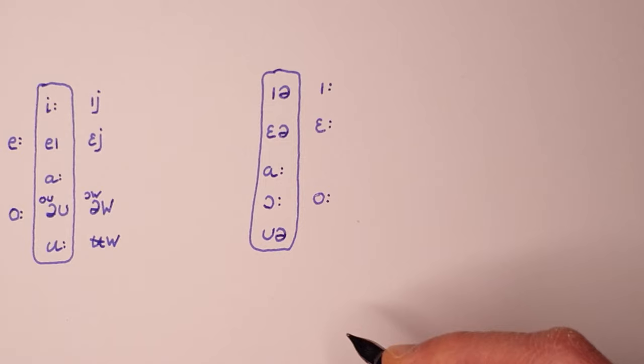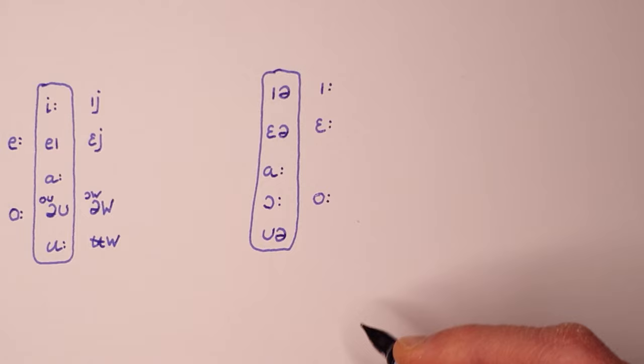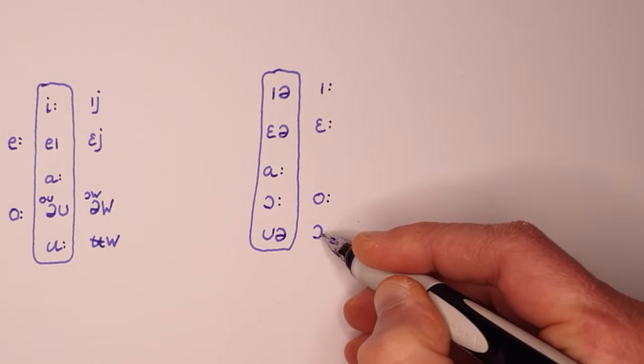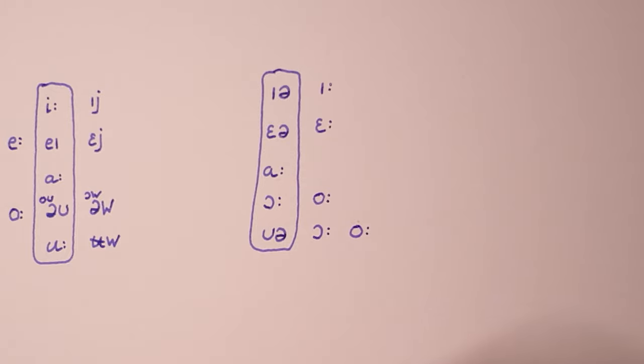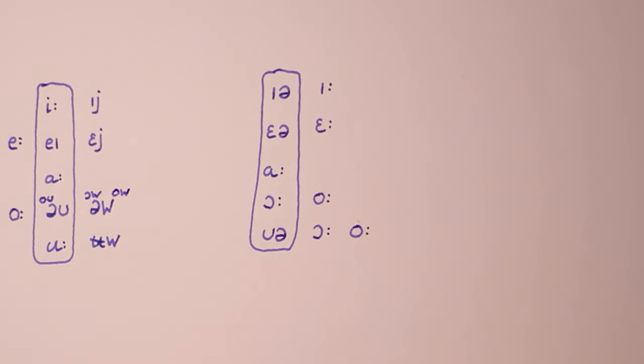But force's RP equivalent is more open, force. Similarly, the diphthong in cure behaves like the vowel phoneme in force, turning into cure in modern RP and cure in SSB. So the SSB equivalent of goat might be goat after all.